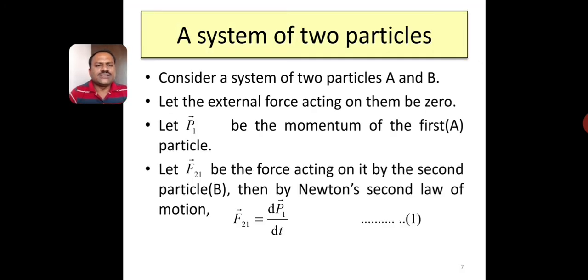Consider a system of two particles, particles A and particle B. Let the external forces acting on them be zero — it is an isolated system. Let p1 be the momentum of the first particle, which refers to particle A. Let f21 be the force exerted on it by the second particle. Then, according to Newton's second law of motion, f21 equals dp1 divided by dt. Let this be equation 1.